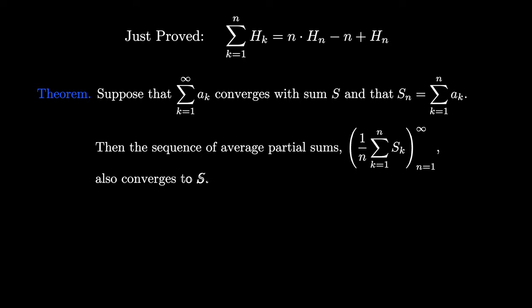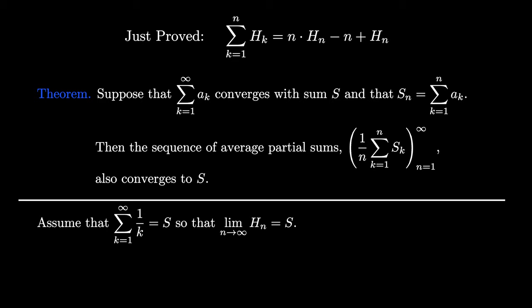Let's combine these two facts to prove something interesting about the harmonic series. Let's assume that the harmonic series, which is the sum where k ranges from 1 to infinity of the fractions 1 over k, converges so that it has a sum S. This means that the limit as n approaches infinity of h sub n is equal to S. Then according to the theorem, we have that S is equal to the limit as n approaches infinity of the average partial sums. But according to our formula, this limit can be replaced by the limit as n approaches infinity of h sub n minus 1 plus h sub n over n. And this limit is equal to S minus 1.